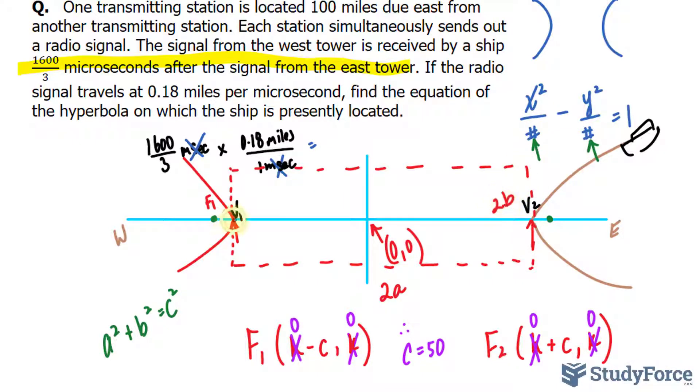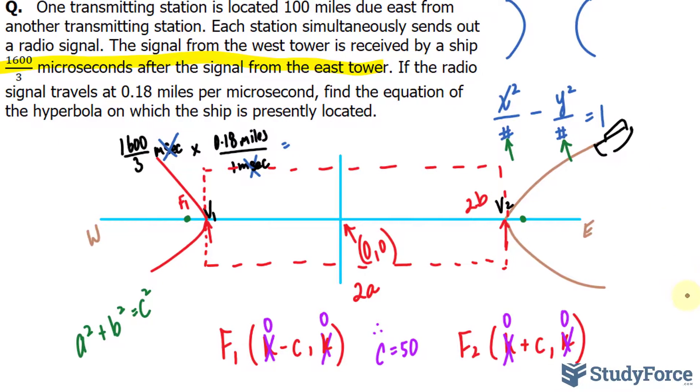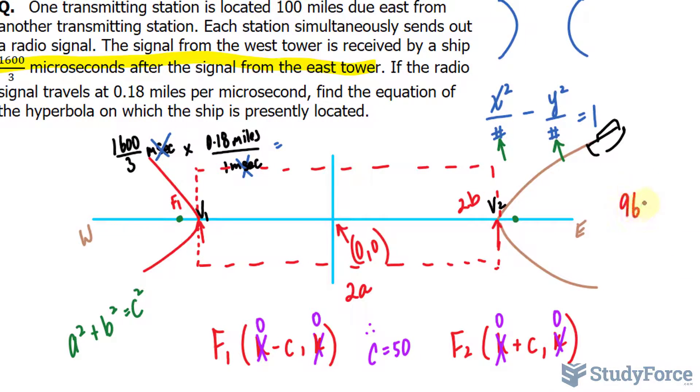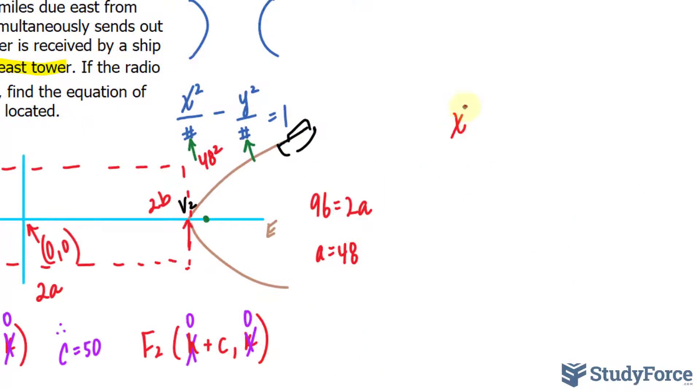We just discovered that from here to here is 96. So I'll write down 96 is equal to 2A. Dividing both sides by 2, I get A is equal to 48. And 48 will be substituted into there. We raise that to the power of 2. So we have x squared over 48 raised to the power of 2.